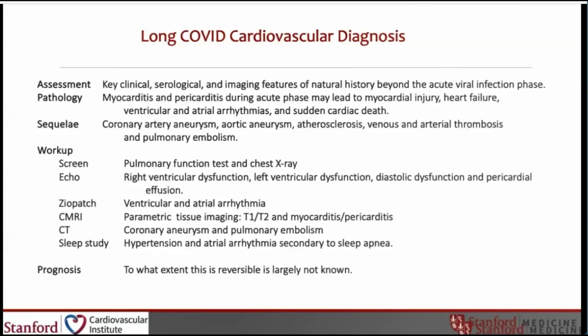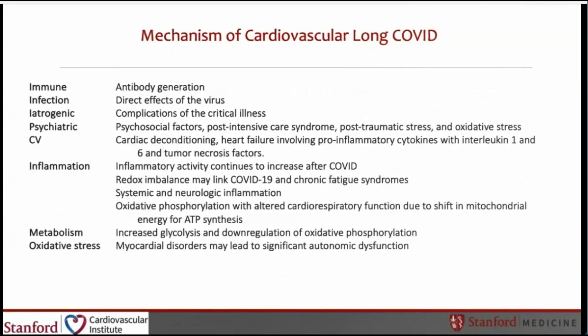In terms of prognosis, to what extent this is reversible and treatable is largely not known. The mechanism of cardiovascular long COVID is multifactorial and consists of a fairly long list: immune mechanisms due to antibody generation, direct infection effects of the virus, iatrogenic complications of critical illness, psychiatric factors due to multiple psychosocial factors, post-intensive care syndromes, post-traumatic stress, and oxidative stress.